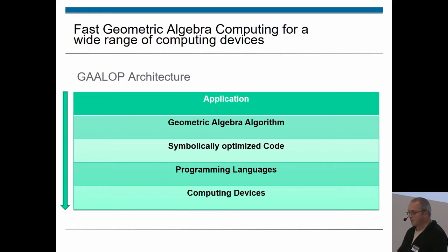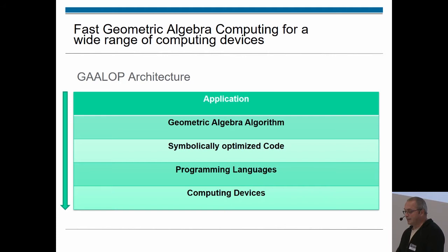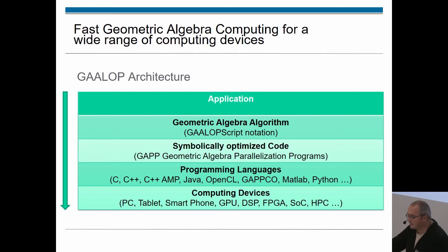GALOPweb is open source on GitHub. This is a short look at the architecture of GALOPweb: first we have our application, then in order to integrate GALOPweb we write a geometric algebra algorithm. GALOPweb then symbolically simplifies and optimizes, and we can generate source code for different programming languages and computing devices.